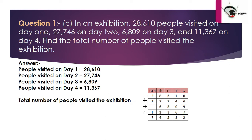Adding the four numbers column by column: 0 plus 6 plus 9 plus 7 is 22, carry 2. Then 2 plus 1 plus 3 plus 4 plus 7 plus 6 gives 13 with carry. Continuing through each column carefully, the final answer is 74,532 total people visited the exhibition.